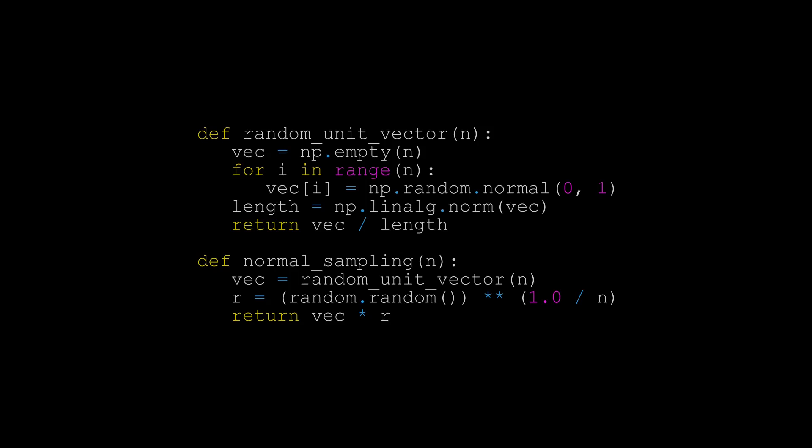Here's my Python code that generates random points in the unit ball using this process. To choose a random unit vector, we create a vector whose components are sampled from the standard normal distribution, then normalize it. To find the uniform random point in the ball, we take that random unit vector and scale it by the nth root of a uniform random number between 0 and 1. Even when n is large, the program finds random points in an n-dimensional unit ball very quickly — much more quickly than rejection sampling. Unfortunately I cannot plot higher dimensional points in our 3D world, so here's a demonstration of this algorithm in 2D and 3D.